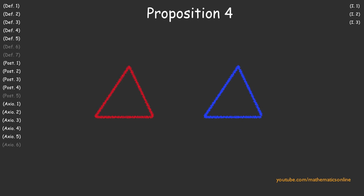In Proposition 4, we prove that if two triangles share a corresponding side, an angle, and another side, then both triangles must be congruent.